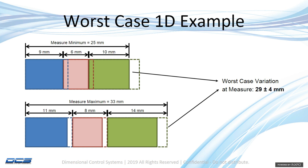The minimum value would be 25 and the maximum value would be 33, making my variation — worst case — 29 nominal, plus or minus 4, or an 8 millimeter range of variation.